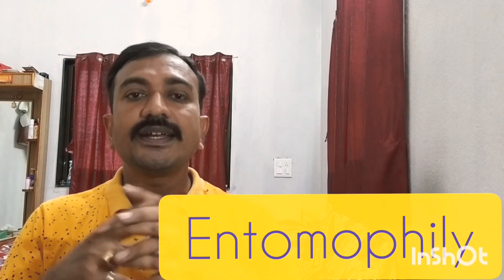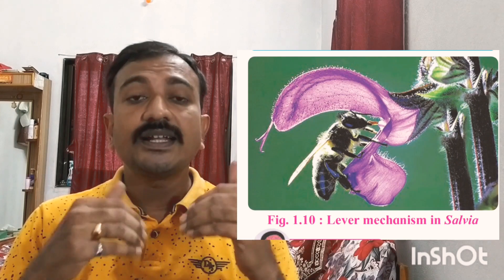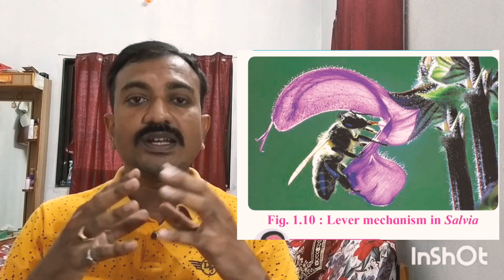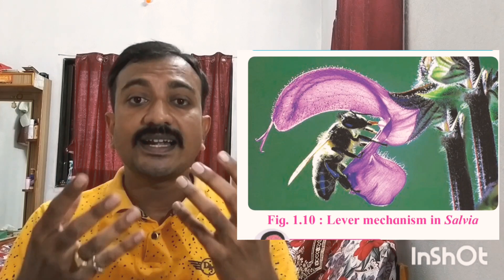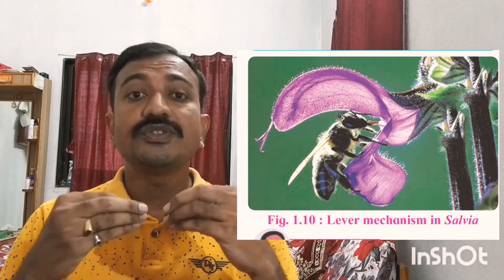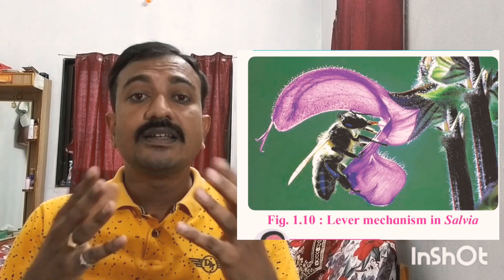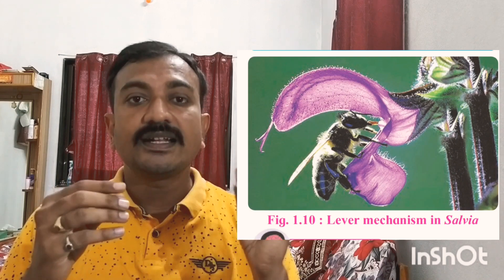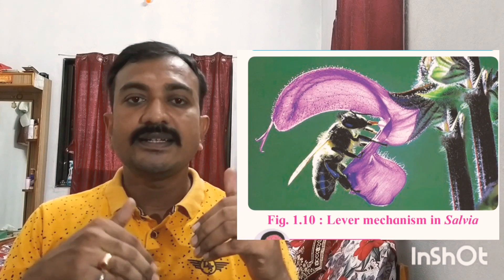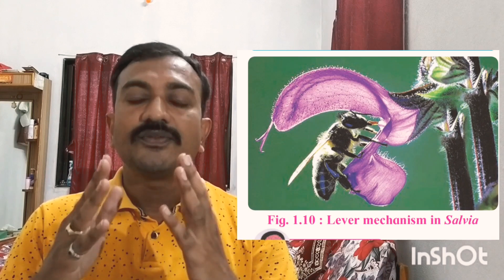Some biotic factors are also helpful for pollination, and according to these different types of biotic factors, different agencies of pollination are formed. The first biotic agency is entomophily — pollination which occurs with the help of insects. Floral adaptations for entomophily include: flowers are large and attractive in color, they show fragrance, they produce nectar which attracts insects, stigma is sticky, and pollen grains are rough and spiny so they can attach to the body parts of insects, which then transfer pollen grain from one flower to another.